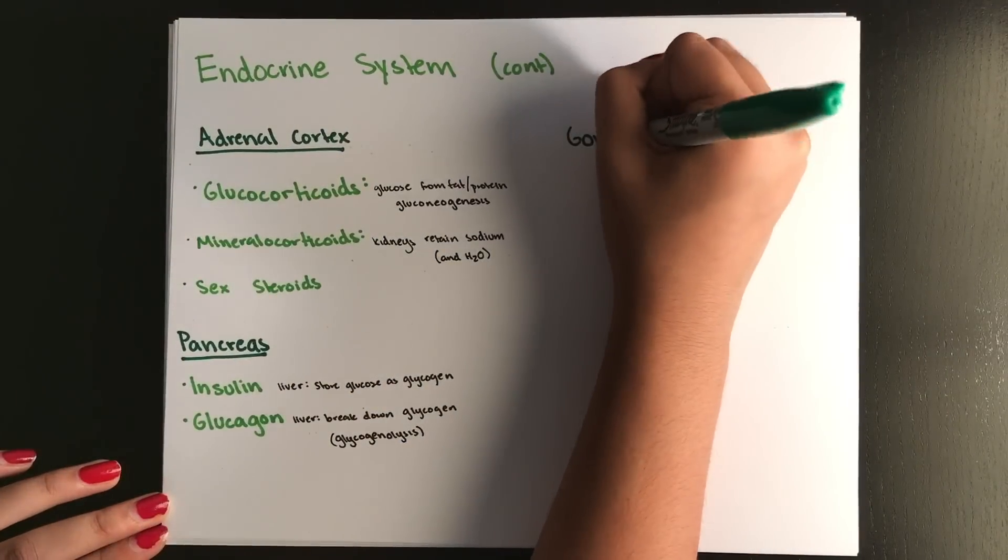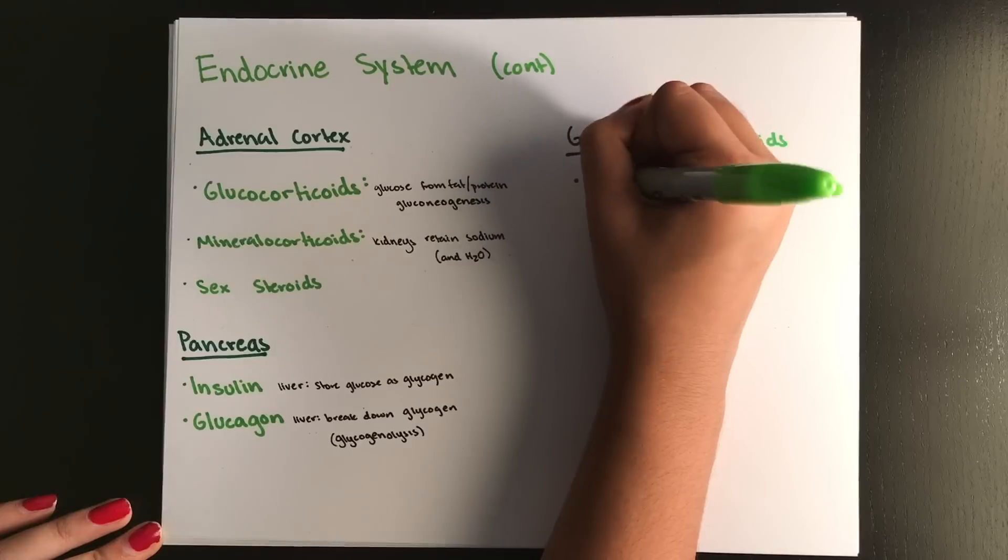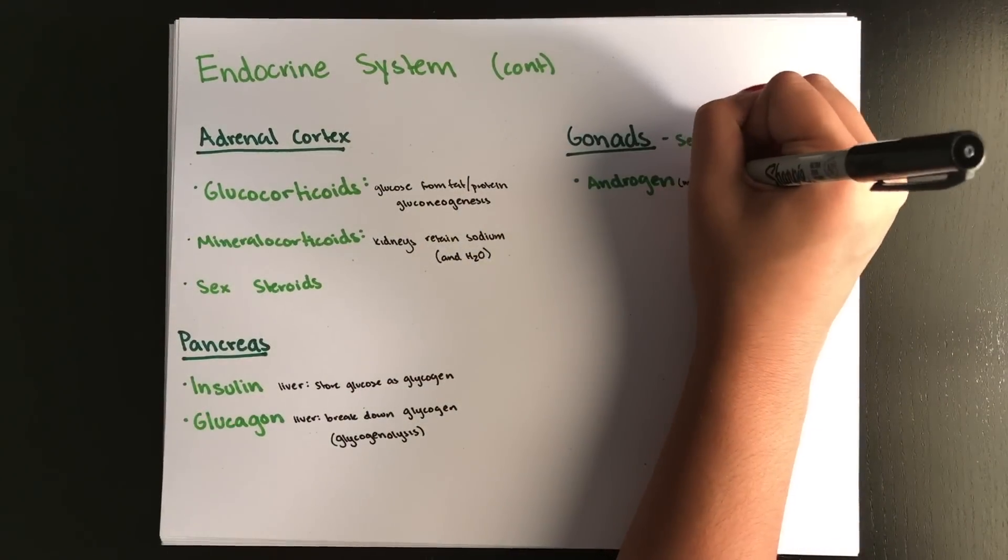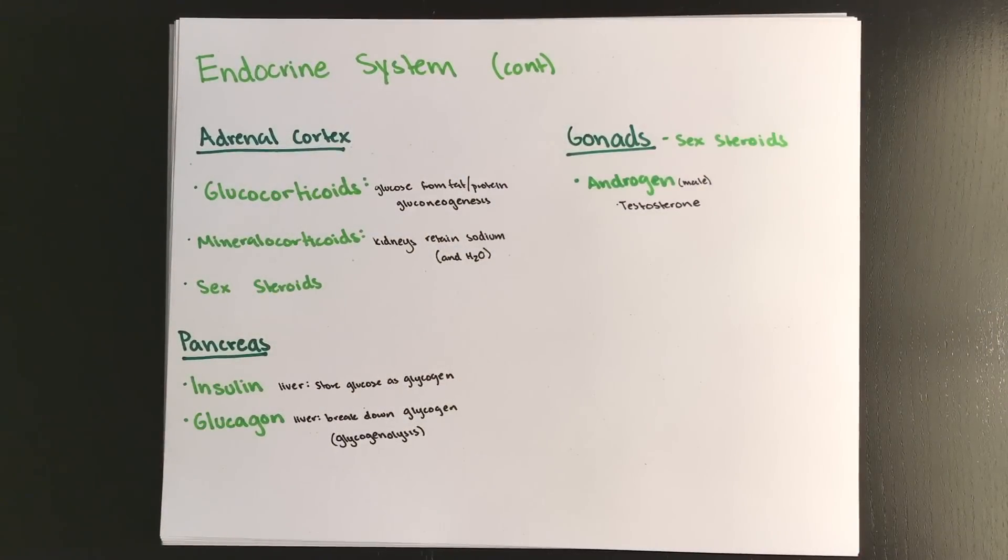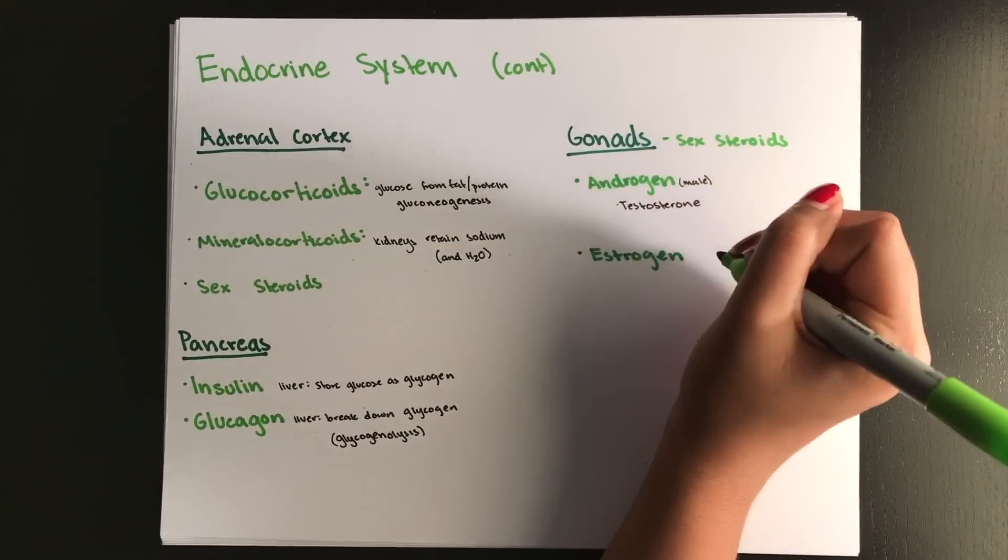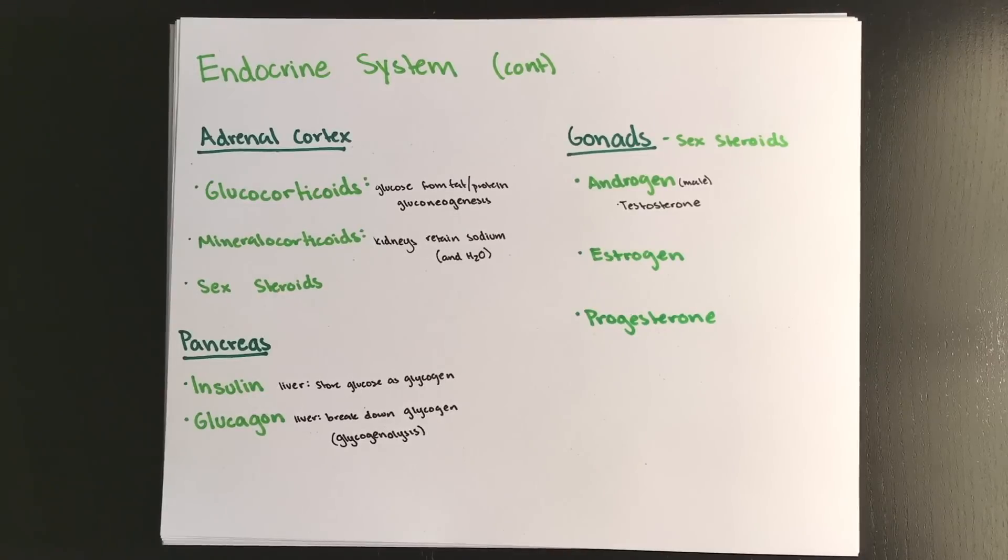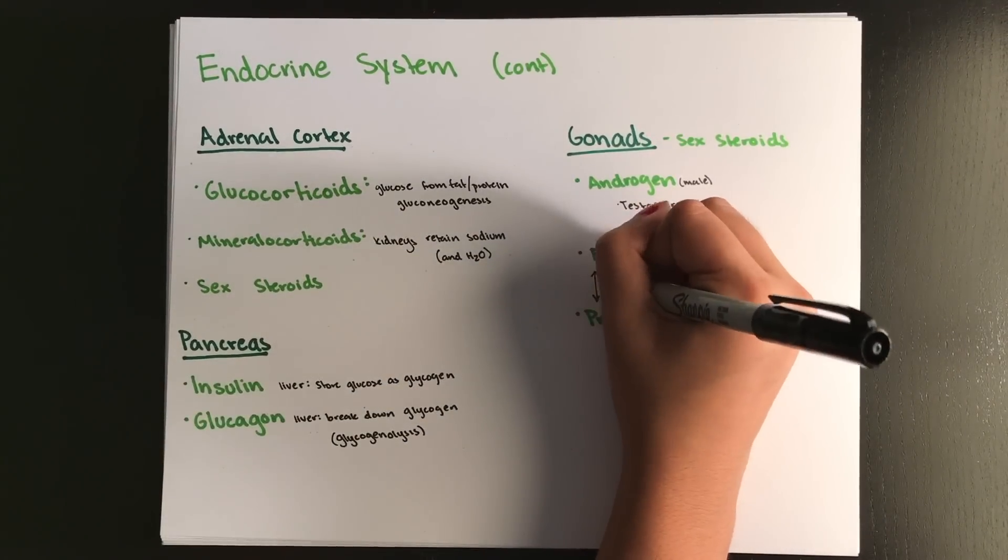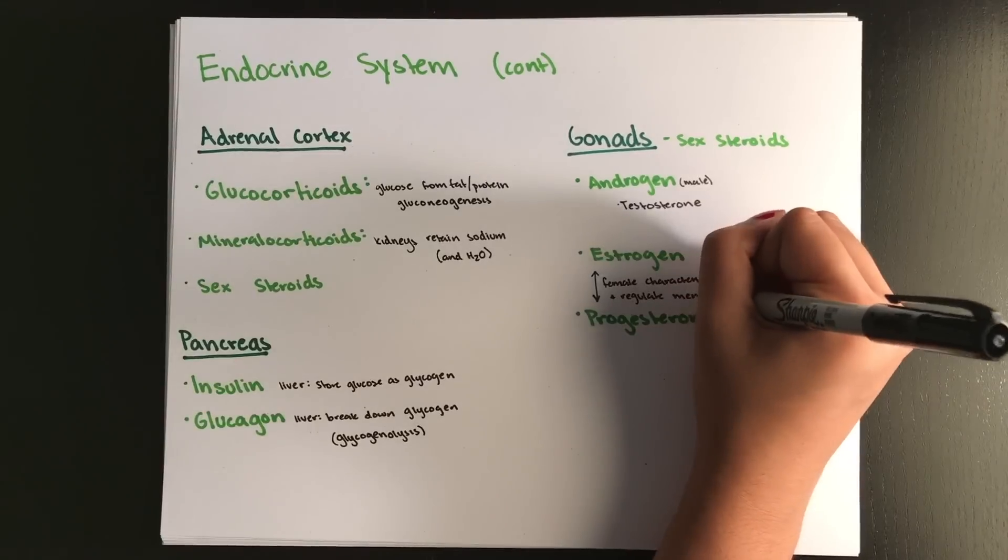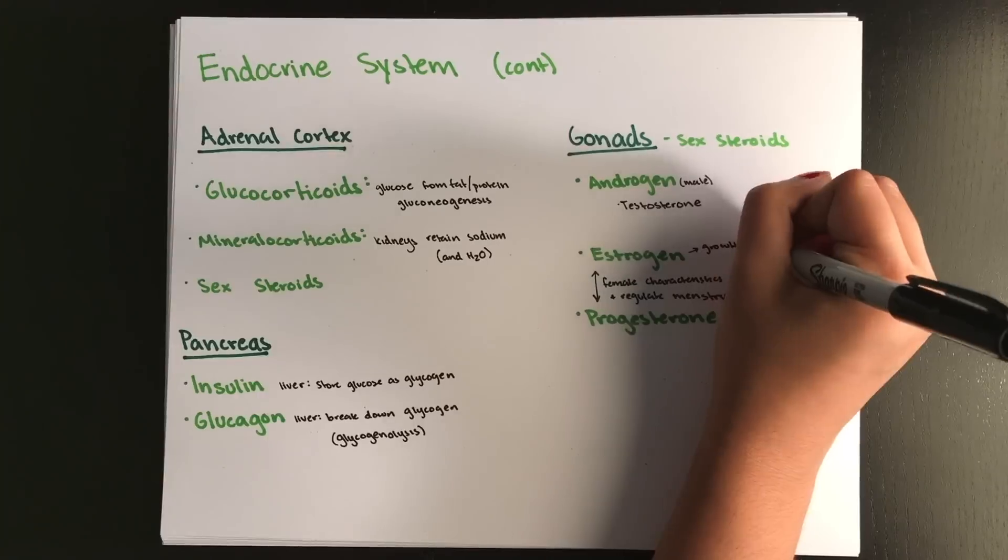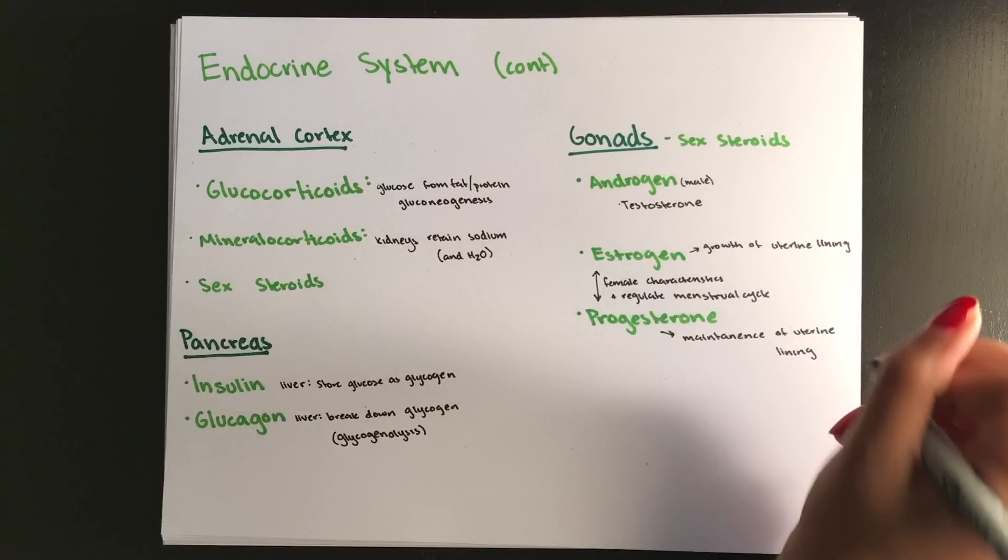Gonads produce and secrete steroids, and they are collectively called the sex steroids. Male gonads produce androgen, and the primary androgen is testosterone, which is responsible for male secondary sex characteristics. The ovary produces estrogen and progesterone. The most common form of estrogen is estradiol. Estrogen and progesterone are responsible for developing female secondary sex characteristics and regulating the menstrual cycle. Estrogen stimulates the growth of the uterine lining in the first half of the cycle, and progesterone maintains it in the second half.